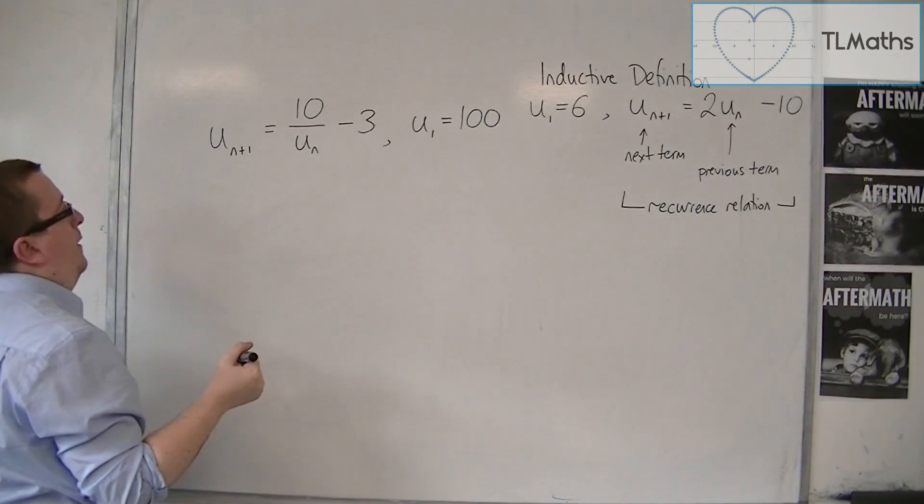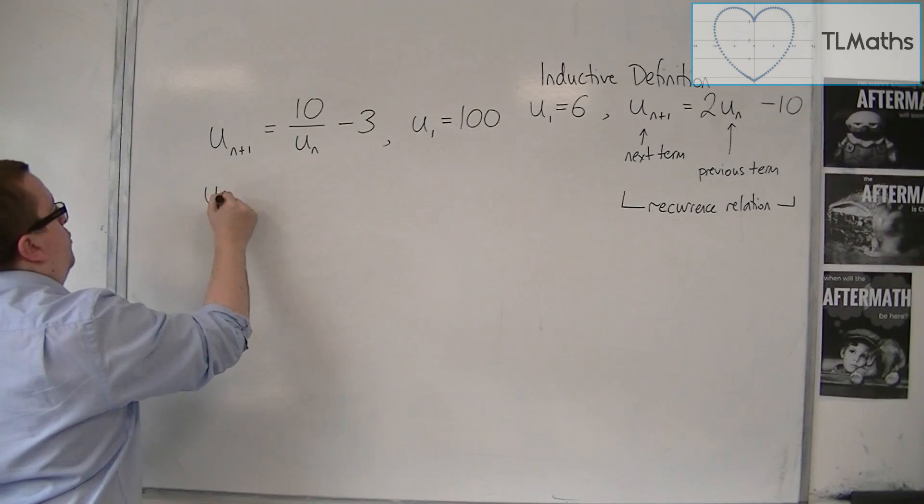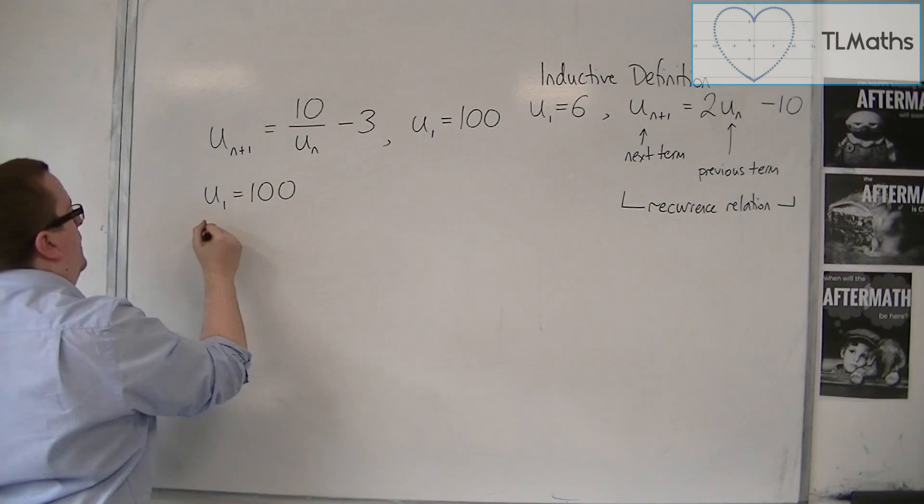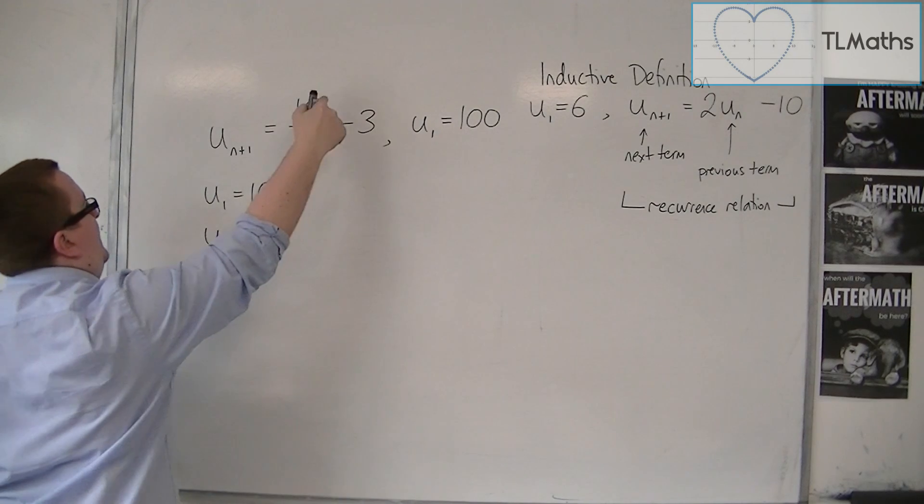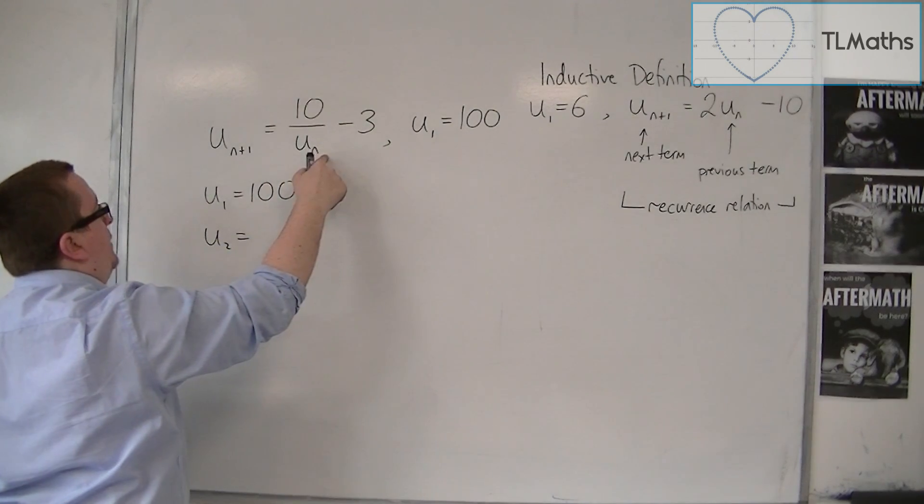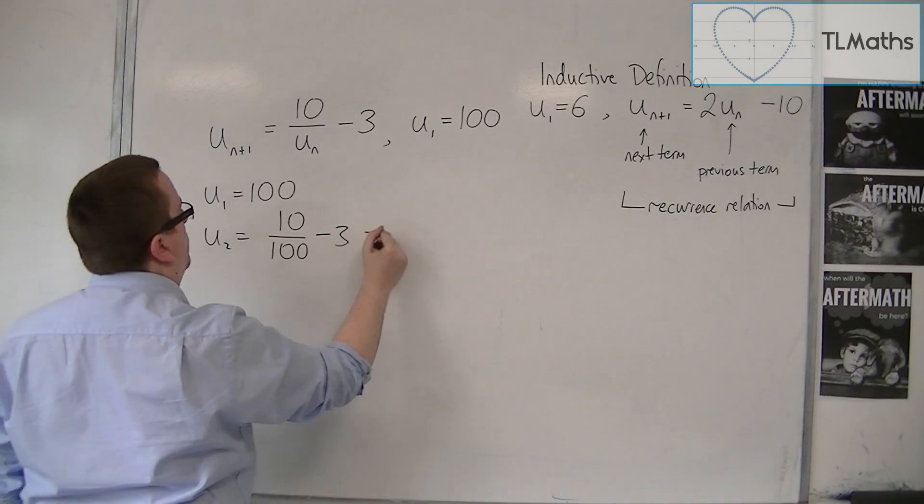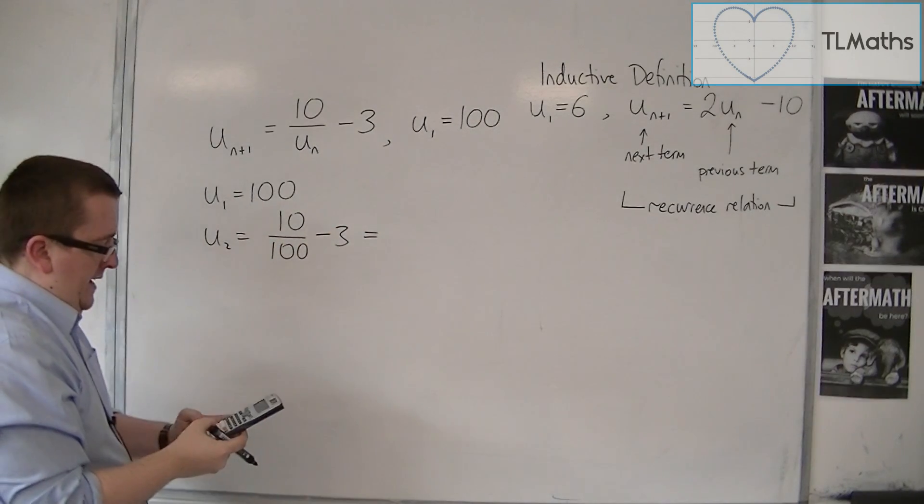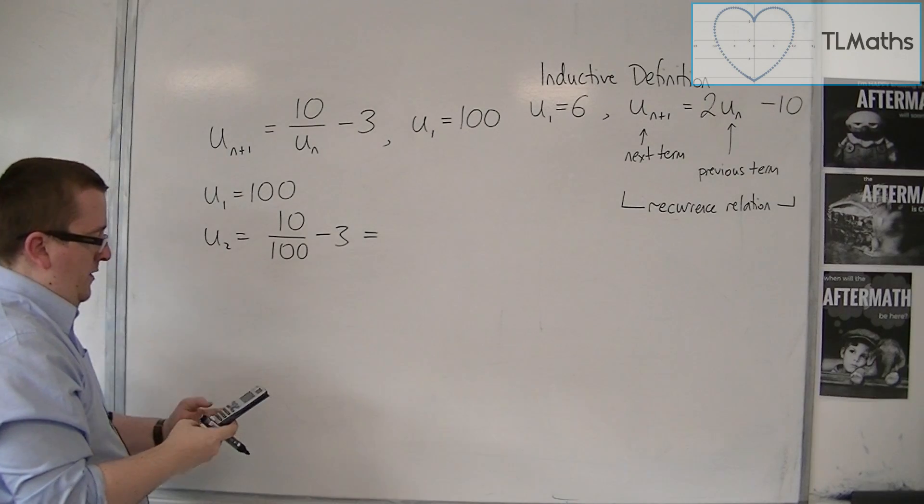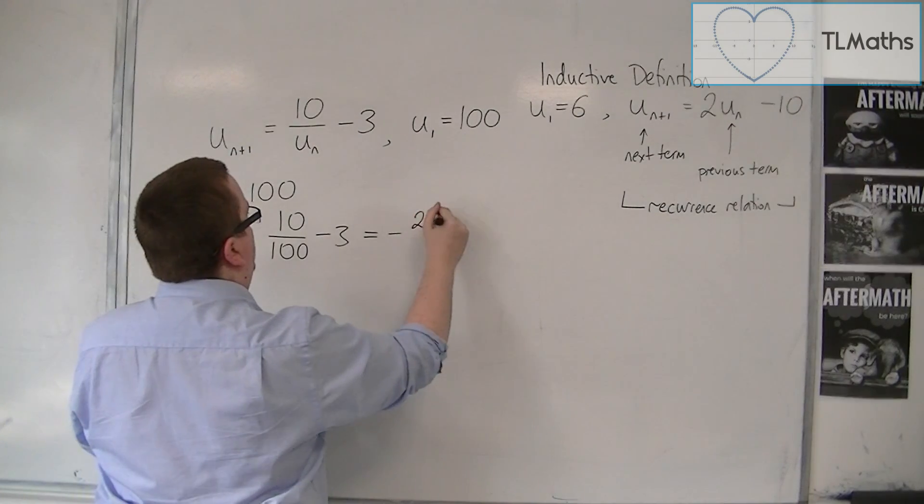So, if U_1 is 100, then U_2 is 10 over the previous term, so 10 over 100, take away 3, which is minus 29 over 10.